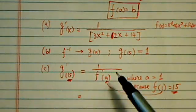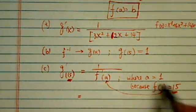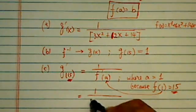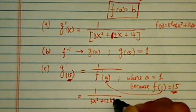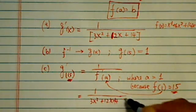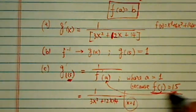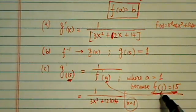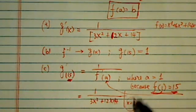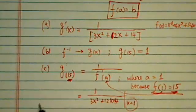Once we have this one settled, then it's 1 over 3x² + 12x + 14, but then x is equal to 1. Once again, the reason x is equal to 1 is we've got to evaluate it at what point of x such that f(x) is equal to 15.